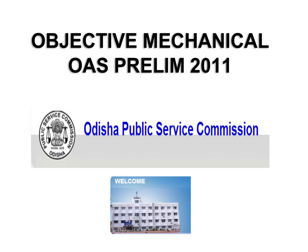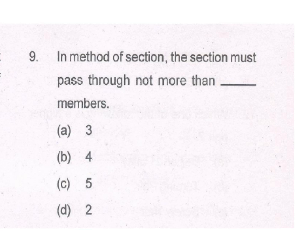Hello friends. In this video I will cover Odisha Public Service Commission, Odisha Administrative Service Prelim 2011 Mechanical Paper. I will solve it. This is part 2 of this video series. In the method of sections, the section must pass through not more than 3 members. The answer is 3.